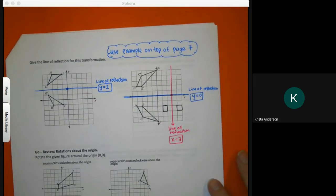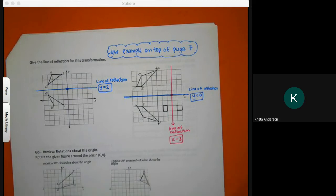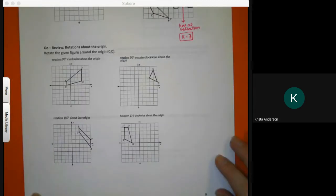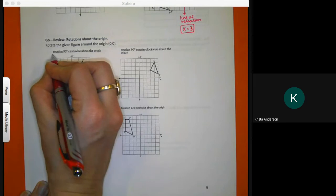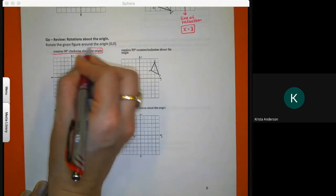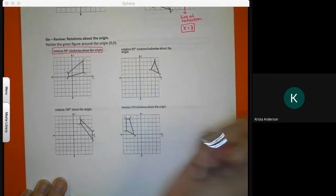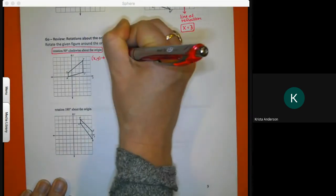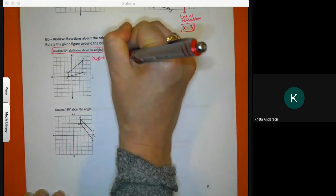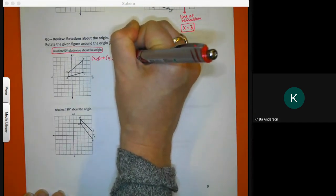Any questions on line of reflection? The last section on your assignment will ask you to rotate the entire image. You do have to graph it. It is not asking for coordinates on this one. For the first one, rotate 90 degrees clockwise. That means I take my X, Y, and I'm going to change it. 90 degrees would be Y negative X clockwise.